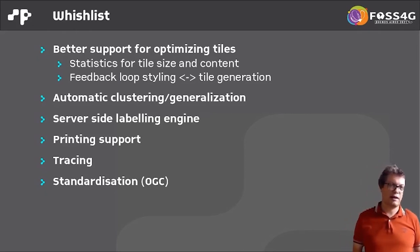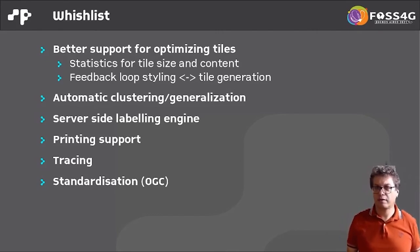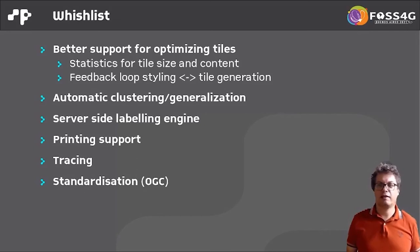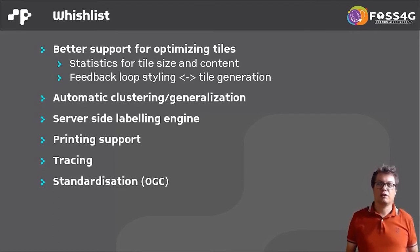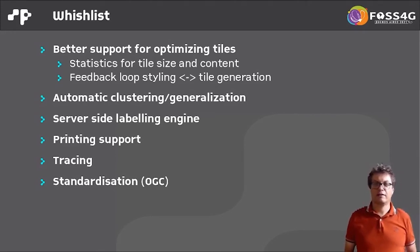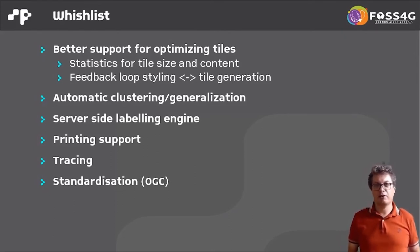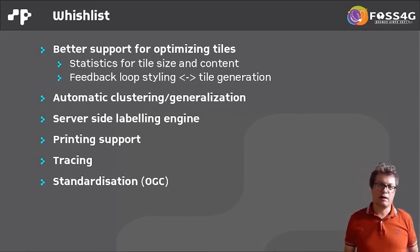Another wish is a server-side labeling engine. Currently most labeling is done client-side, which has many problems — as all tile-based maps have labeling difficulties. A server-side labeling engine could solve many of these problems and create much better labeling. I would also wish for easier printing support, because printing vector tile maps is still hard and it's not easy to get a good print output. Finally, more tracing functionality — knowing how much time is spent in the database, in data reading, in pre-processing and tile generation.